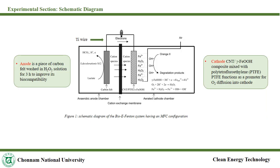The schematic diagram shows anode and cathode chambers. The anode is a piece of carbon felt washed in hydrogen peroxide for three hours to improve its biocompatibility. In the anode chamber, Shewanella decolorationis produces electrons utilizing lactate. Electrons flow through a titanium wire to a cathode chamber where hydrogen peroxide and ferrous ions are generated. Hydroxyl radicals produced by the reaction of both reagents degrade orange 2 dye.